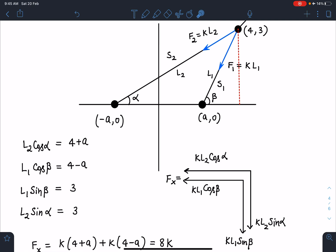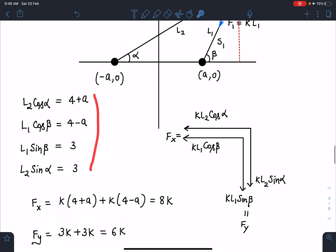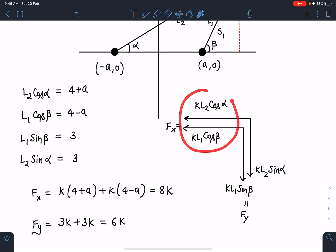Similarly L1 cos β component gives total of 4 minus a. This length L1 sin β is going to be 3. Similarly in the bigger triangle, L2 sin α is also going to be 3. Once I write this, I can write the force Fx as L2 cos α which is 4+a, so this is k(4+a). Similarly L1 cos β is k(4-a).